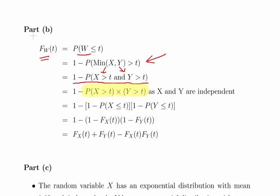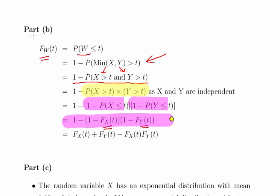We can express those probabilities as complements: probability of X greater than t equals one minus F_X(t), and probability of Y greater than t equals one minus F_Y(t). What we want to do is bring F of X and F of Y into the expression. Although it looks complicated, we can rearrange it algebraically very quickly. Working it out, we get F_X(t) plus F_Y(t) minus the product of the two. It's a little more complicated than before but progresses quickly once you remember to use complements.